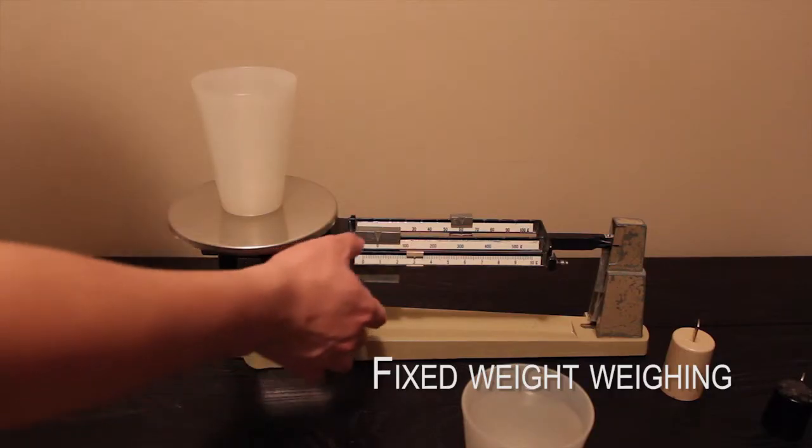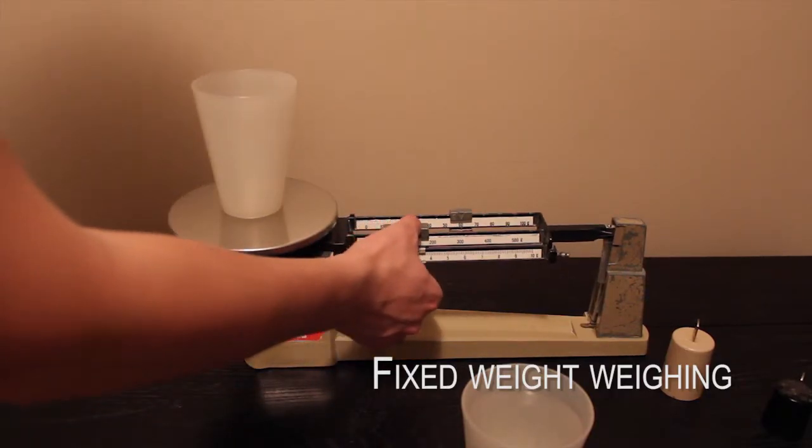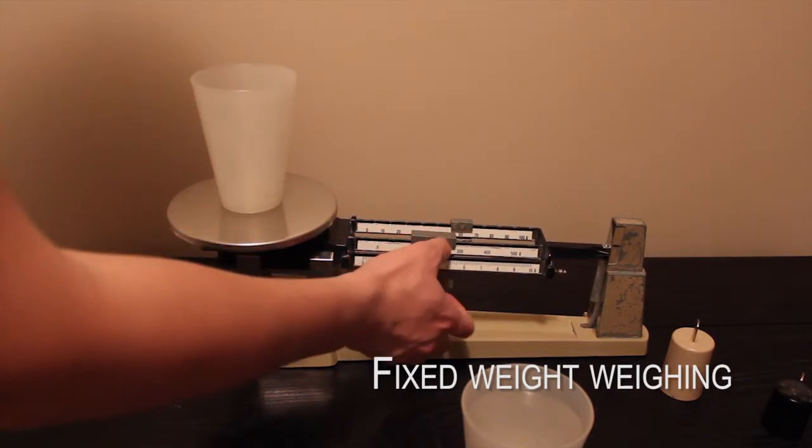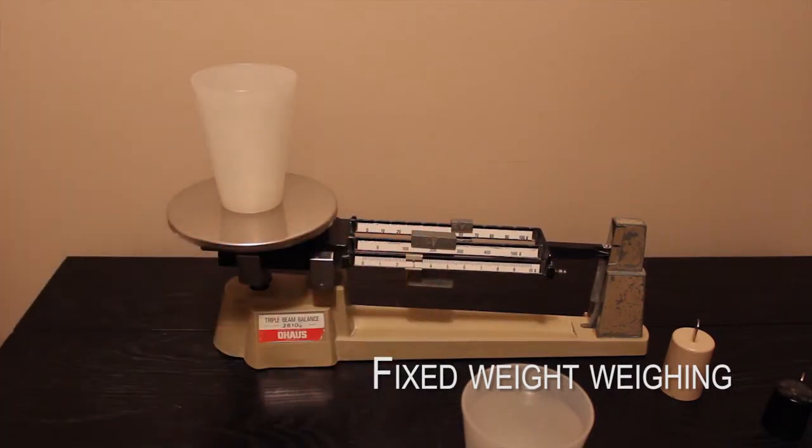Another way to use the scale is to have a fixed measurement, and to pour the powder, capsules, or liquid until the balance pointer is fixed to the middle point.